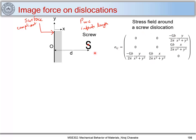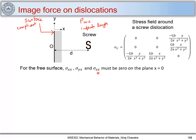We will use this to identify the force on this screw dislocation by the surface. An important property of the free surface is that the tractions σ_xx, σ_yx, and σ_zx must be zero, because there will not be any stresses which the screw dislocation experiences on this surface. These terms must be zero at point O, that is at x = 0. The force exerted by this surface on this screw dislocation is attractive.